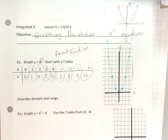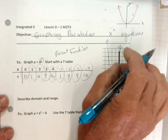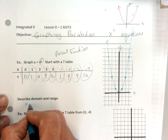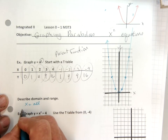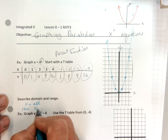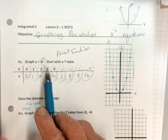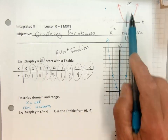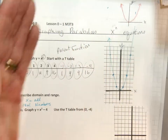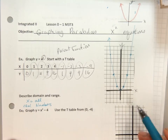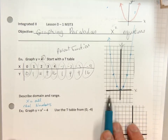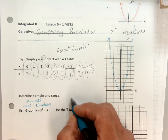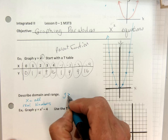Now, domain and range. The domain is forever wide — domain is just going to be x equals all real numbers. Think about this: you can plug any number in you want, it's always going to work. Now the range is different because there's no values down here, there's no graph here. So the range is going to be y is greater than or equal to 0.